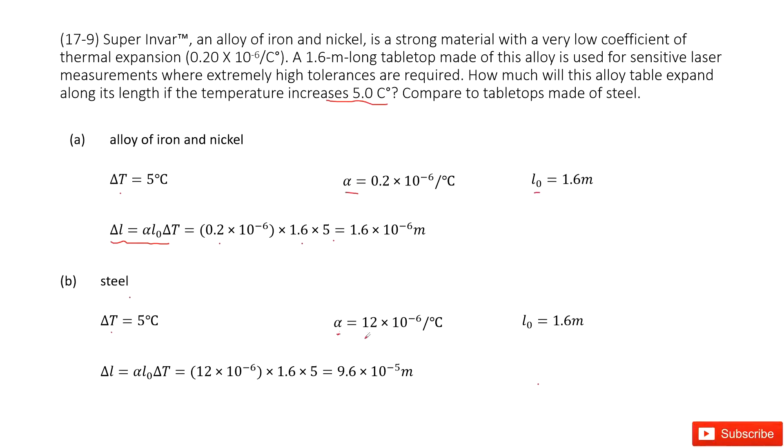So we check our textbook and find the coefficient of thermal expansion for steel. Alpha is equal to this one. It's still a very small number.